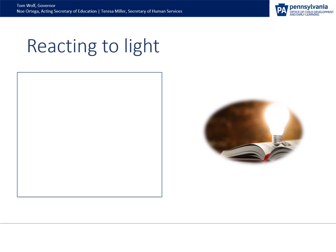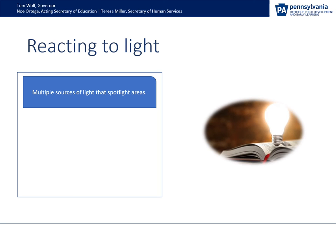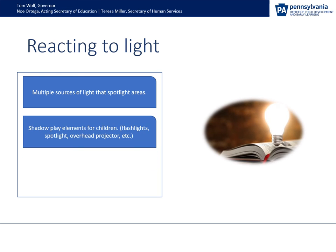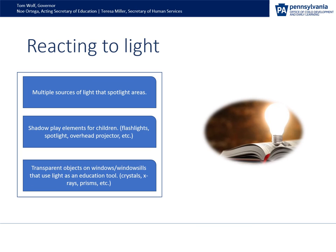What are some ways you can add light to your classroom? Here we'll look at three different ideas based on the principle elements heighten ambiance. Think about if you have these elements already in your classroom, or if not, are they things you would like to have? The first one: multiple sources of light that spotlight areas. Shadow play elements for children like flashlights, spotlights, overhead projectors, and transparent objects on windows or window sills that use light as an educational tool — like crystals, x-rays, and prisms.